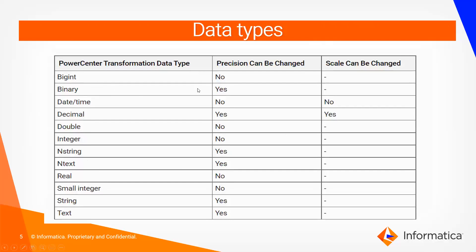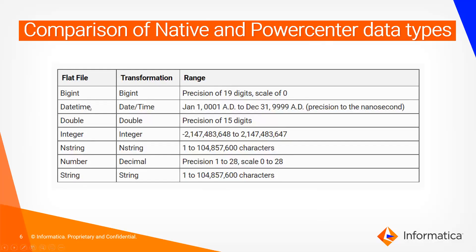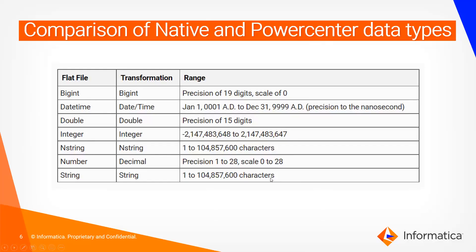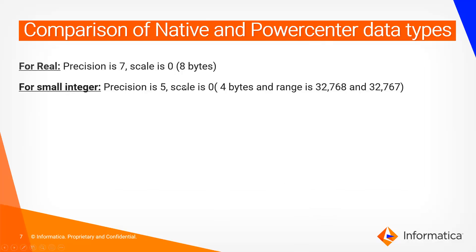Bigint has precision 19, scale 0 - you cannot change it. Datetime is also fixed and cannot be changed. Double has precision of 15 digits, scale 0 - also fixed. Integer cannot be changed either. Number (decimal) has range 1 to 28 and you can change the precision. All string types can have their precision changed. Real has precision 7, scale 0. Small integer has precision 5, scale 0. Real is 8 bytes and small integer is 4 bytes.